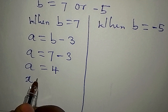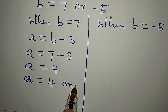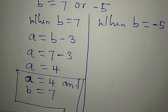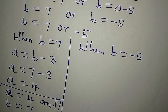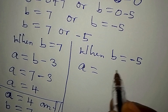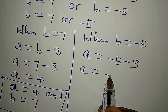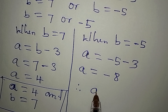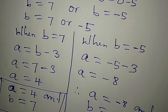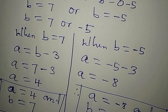So the first solution is A equals 4 and B equals 7. When B equals minus 5, A equals minus 5 minus 3, so A equals minus 8. Therefore the second solution is A equals minus 8 and B equals minus 5.